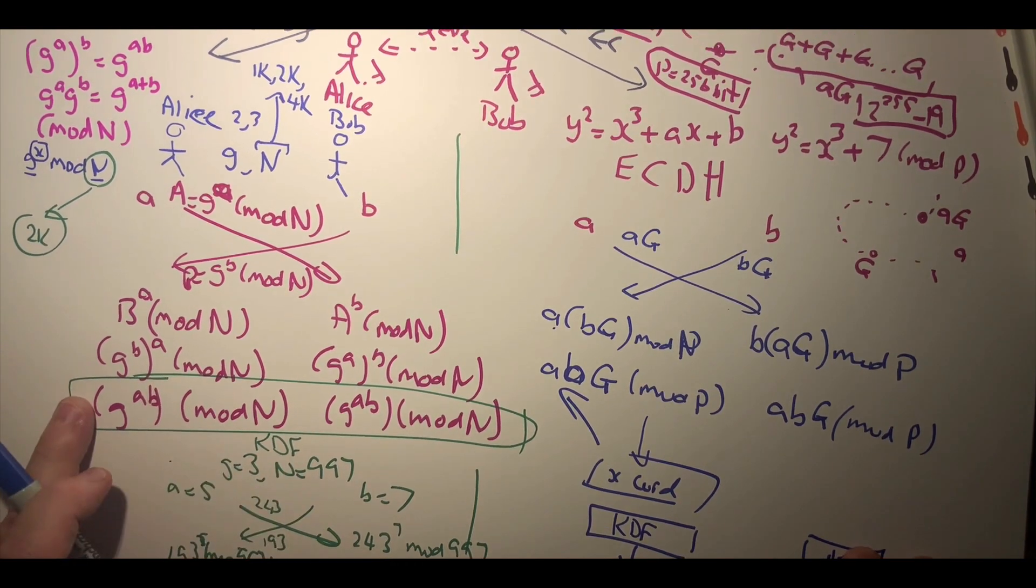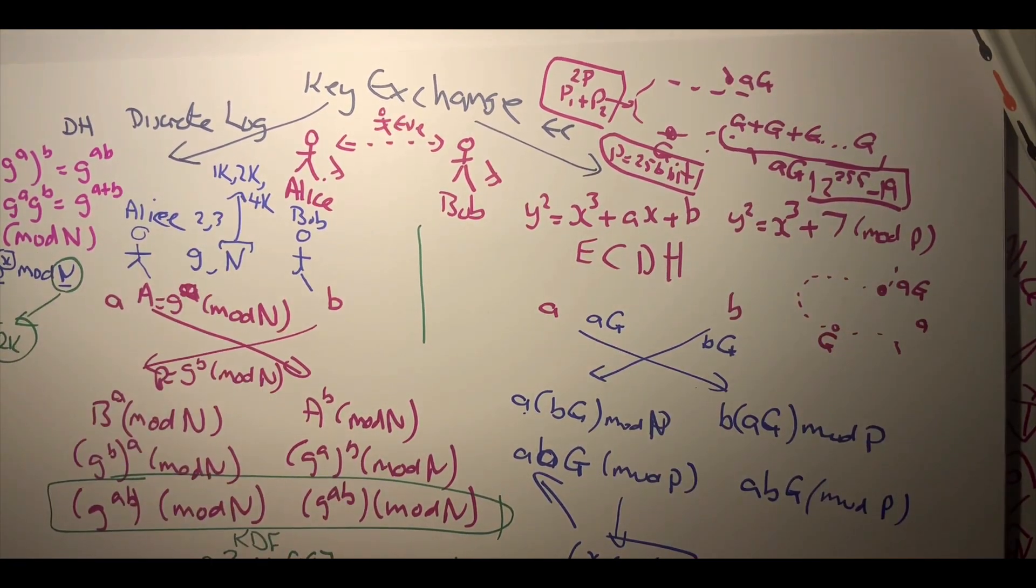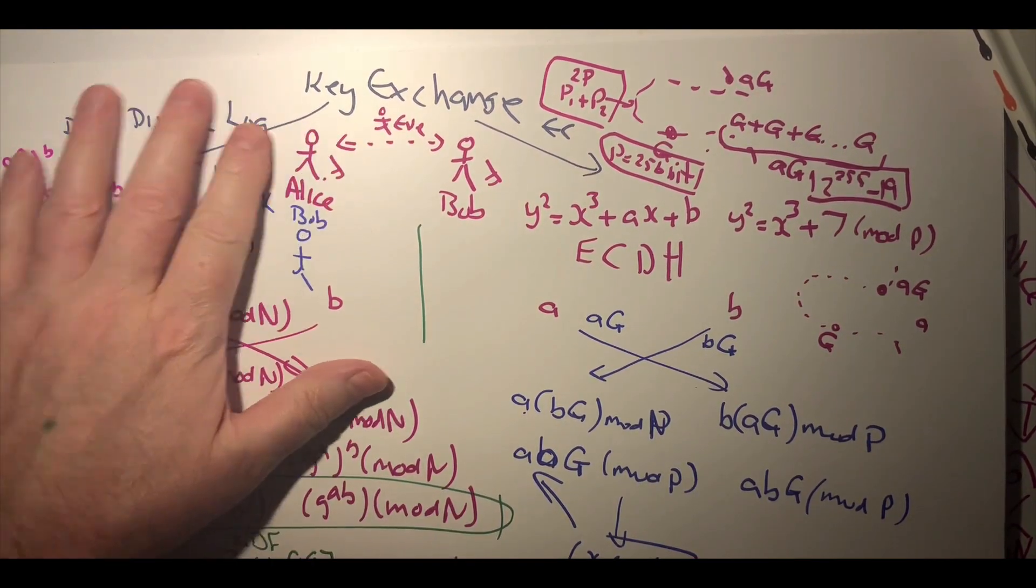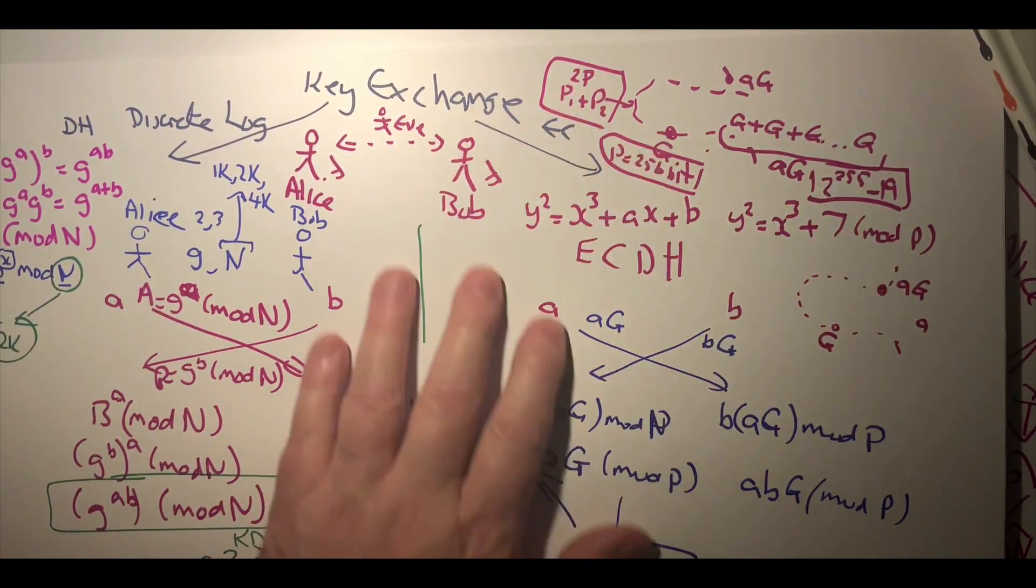Okay, so that's the two main methods that we would use in terms of key exchange: Diffie-Hellman method and elliptic curve Diffie-Hellman method.